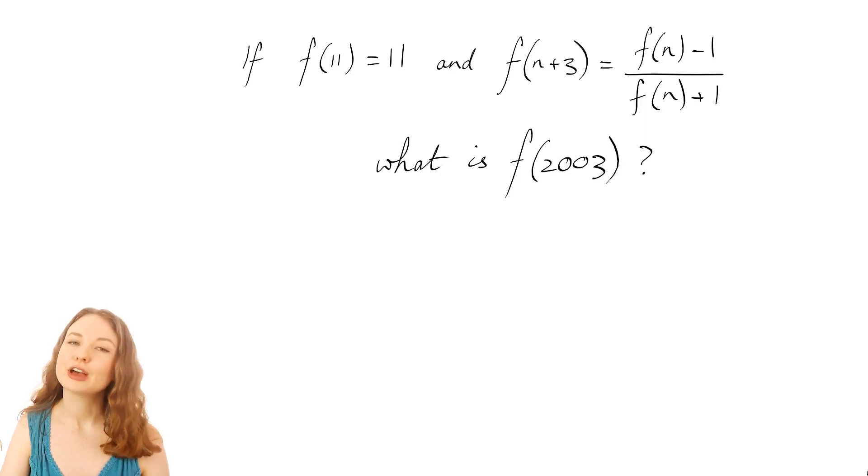So the question is if f of 11 equals 11 and f of n plus 3 equals f of n minus 1 all over f of n plus 1, we have to find f of 2003. So you might like to pause the video here and see if you can figure that out.